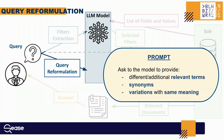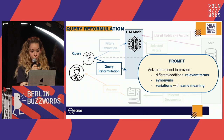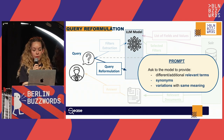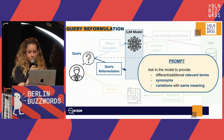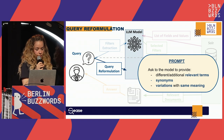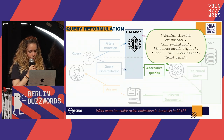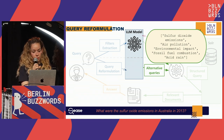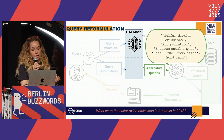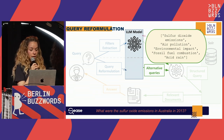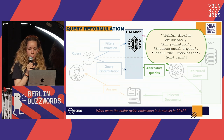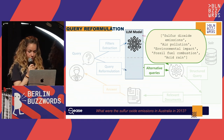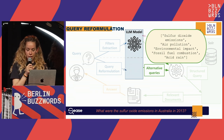The second task the large language model performs is query formulation. We create a prompt asking the model to generate additional ways to ask for the same thing the user is searching for — adding additional relevant terms, synonyms, and variations to expand the capabilities of our query. For example, for 'sulfur oxide emissions' in the query, the model returns 'sulfur dioxide emissions' and understands related terms like 'air pollution,' 'environmental impact,' 'fossil fuel combustion,' and 'acid rain.'